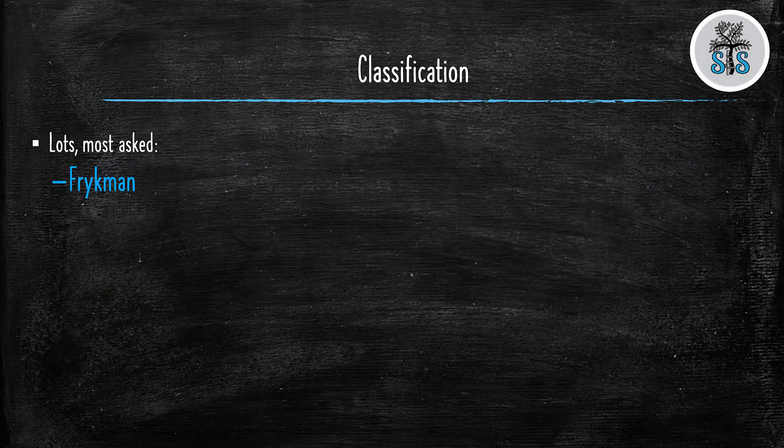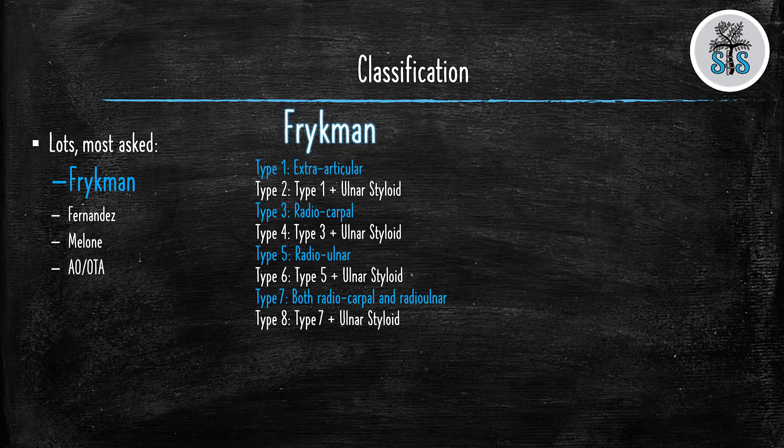Classifications — always high yield. In this instance, none of these help with actual treatment dictation, but Freikman is often asked about. Just remember: type 1 is extra-articular and the rest are intra-articular. Type 3 is going to be radiocarpal, type 5 is radial ulnar, and type 7 is going to be both. All the even numbers just include an ulnar styloid.